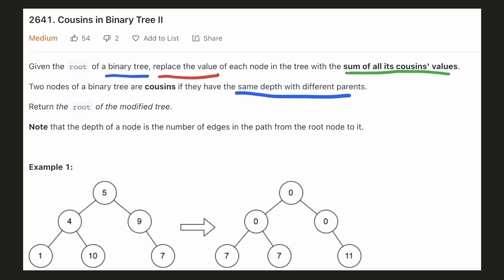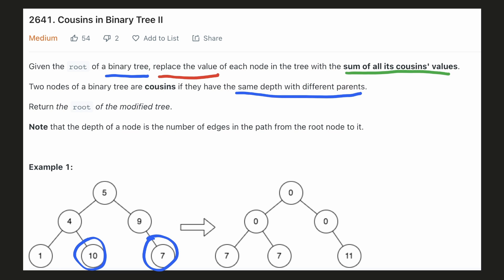We are also given the definition of a cousin — cousins are nodes which lie at the same depth but with different parents. For example, these two nodes have the same parent hence they are not cousins. On the other hand, if we look at these two nodes, they come from different parents hence they are valid cousins. Similarly, these two nodes are also valid cousins.